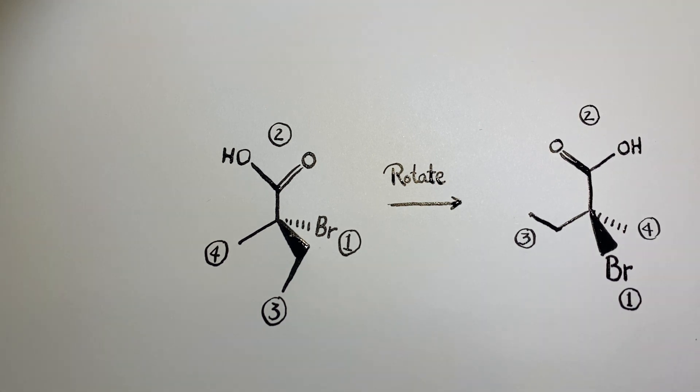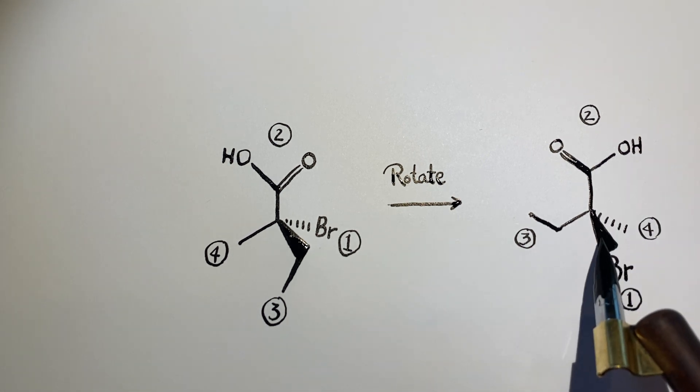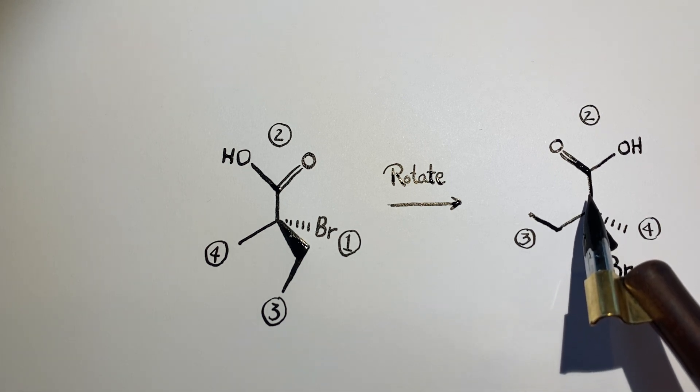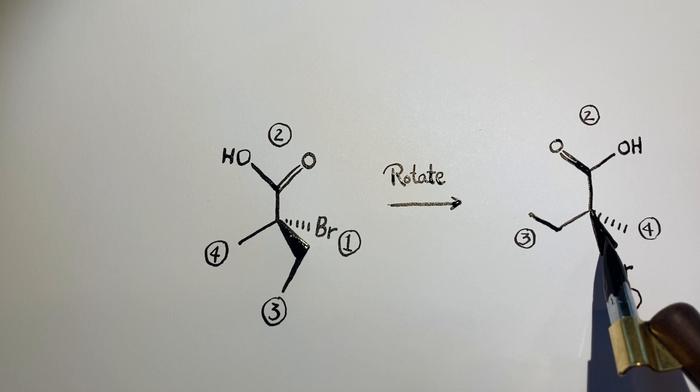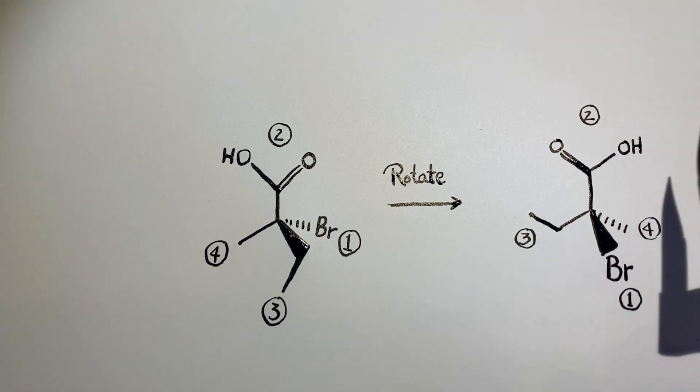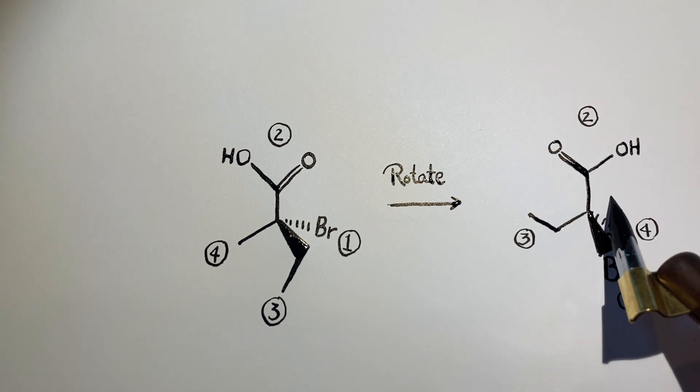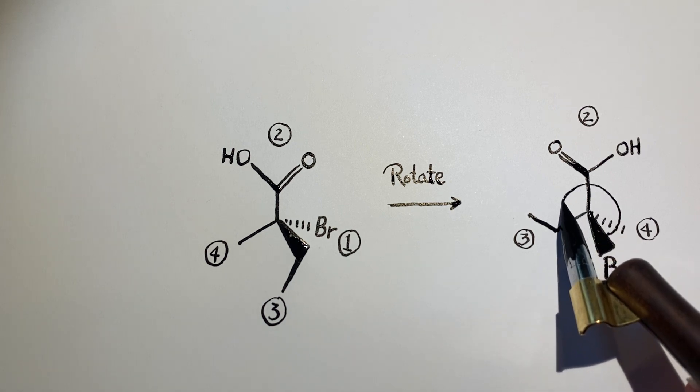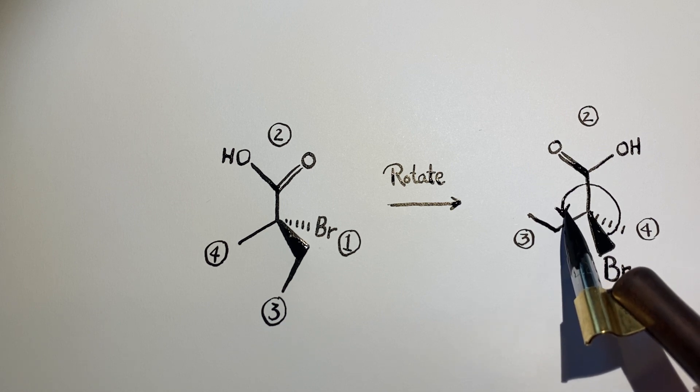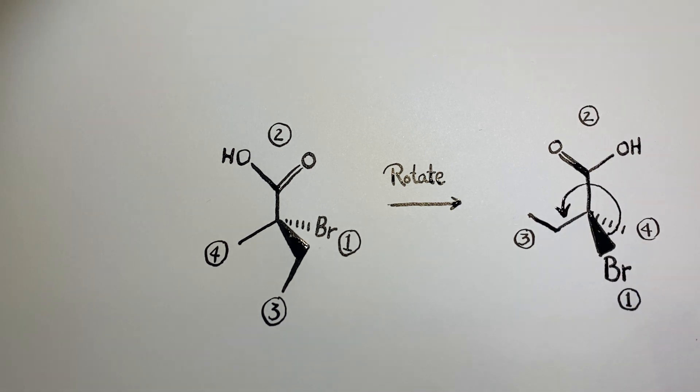So, now, we can go from, remember, ignoring the one that's in the back. We're just going to compare these three that are in the front. And we're going to go from one to two to three. So, now, we see we start here. We follow it. We go one to two to three. That's counterclockwise. So, this molecule must have S designation.